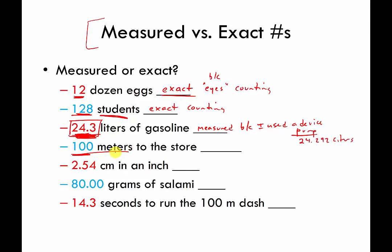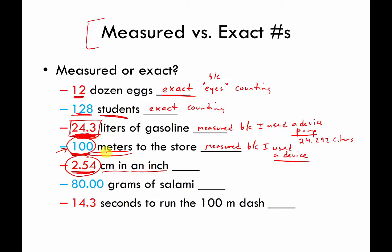If I tell you it's 100 meters to the grocery store, that's a measured number because I had to use a ruler, a car, or something — a device — to make the measurement. I picked 100 because it sounds round and like it should be exact, but it is not an exact number. If I say 2.54 centimeters in an inch, this looks messy but it's considered exact because it's part of a rule that people made up — a number that people picked — so it's considered exact.